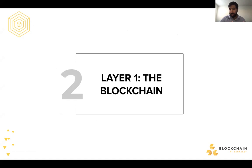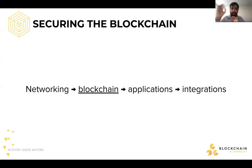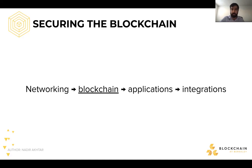Let's talk about the first layer: the blockchain. We have fundamentally networking — the ability to send information from one person to another, whether via Facebook Messenger or Zoom. On top of this networking layer, we've built a blockchain — which could be Bitcoin, Ethereum, or any fundamental protocol that enables distributed and trustless consensus. And that's what we're going to focus on in this section.